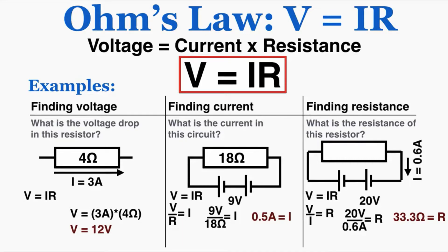So in this first example on the left, that current experiences a voltage drop of 12. In the middle example, the current moving in the circuit is 0.5 amps. And in the last example, the resistance in that resistor is 33.3 ohms.